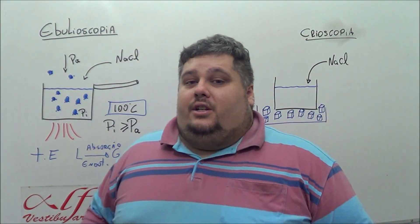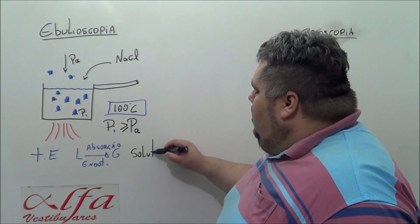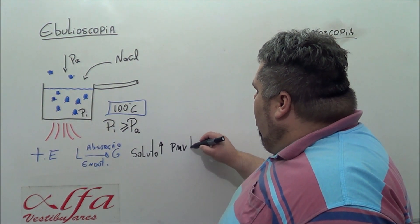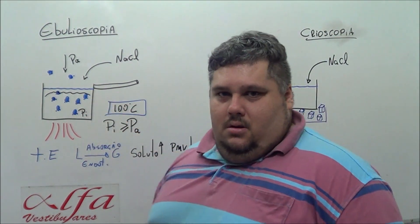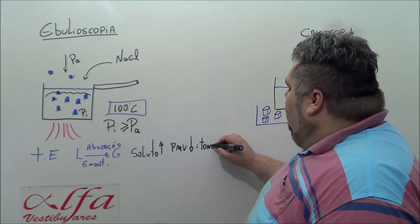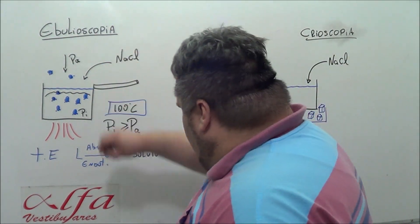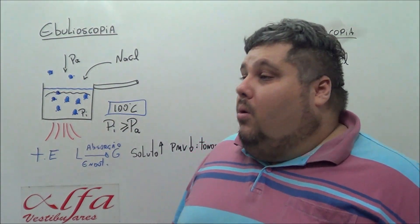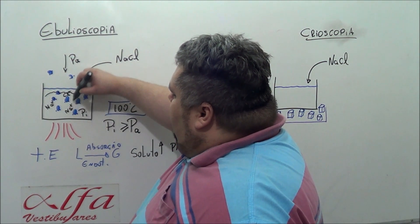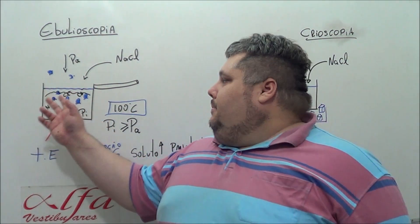But the problem is the addition of a solute not volatile. In tonoscopy, we saw that when we add a solute not volatile, the pressure maximum of the vapor diminishes. Because I create a physical barrier and this impedes that the molecules go to the gas system.